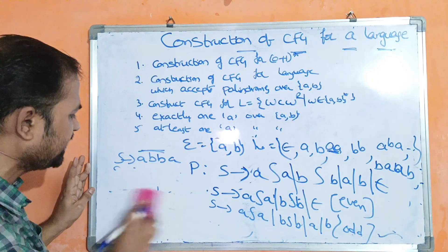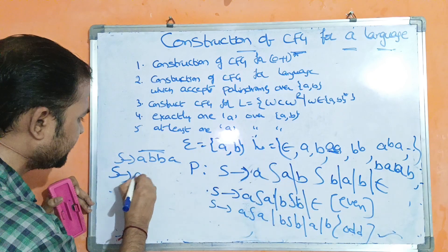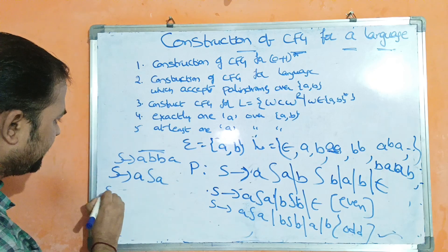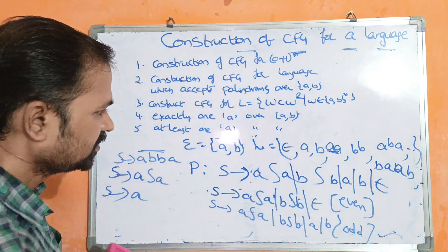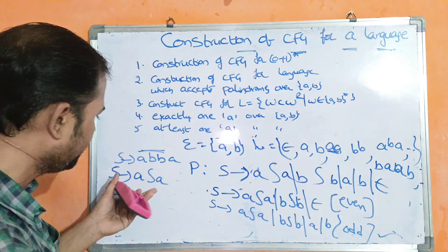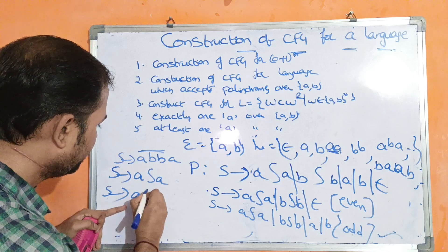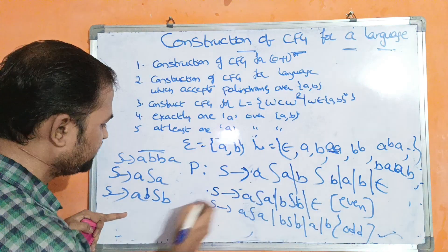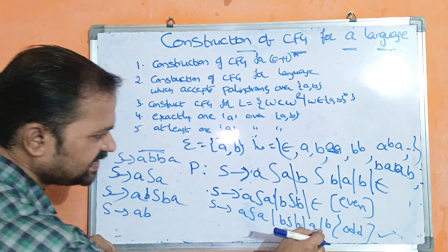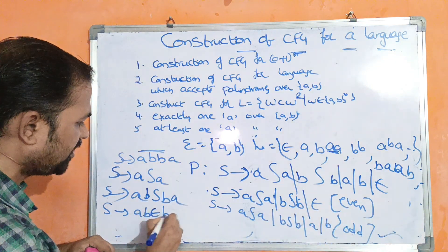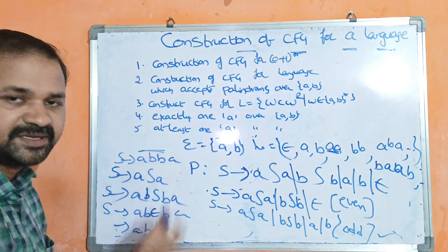The reverse of ABBA is ABBA, confirming it is a palindrome. S implies ASA; taking A as the first symbol. Then S implies BSB; taking B for the inner S. Then S implies epsilon for termination: A B epsilon B A = ABBA. This is the derivation. Now let us see the next example.